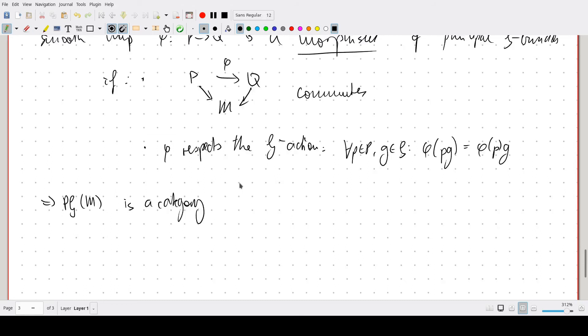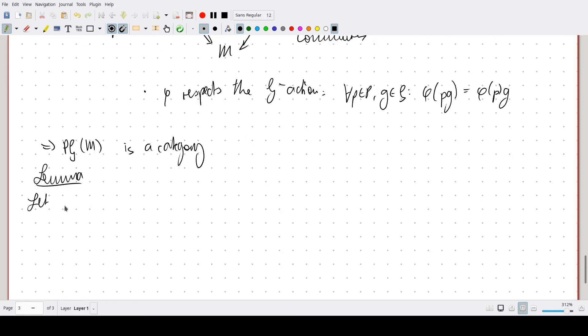But even more, I guess that's a lemma: if phi be a morphism of principal G bundles, then phi is an isomorphism. And I'm not going to prove that, but the reason for that is that we can look at phi on the fibers of the bundle. And on